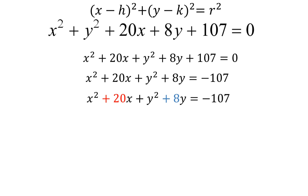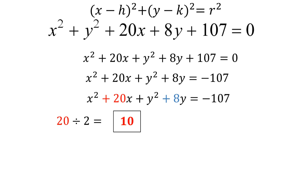Now I'm ready to start completing the square — you do this step every time. I'm going to take the number in front of x and divide that number by 2: 20 divided by 2 gives me 10, and I put a box around that because it's important. Then I do the same thing with the number in front of y, which is 8: 8 divided by 2 gives me 4, and I put a box around that as well.